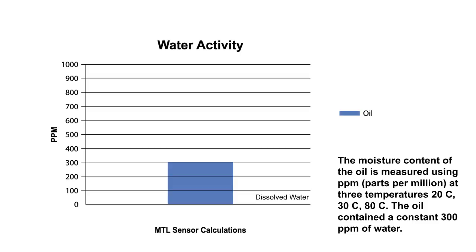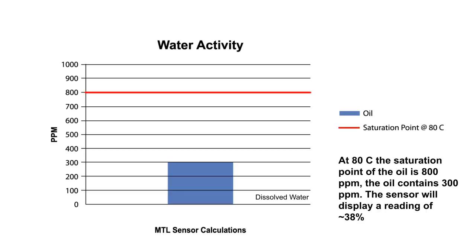The example below depicts an oil with a constant moisture content of 300 ppm at three different temperatures. The three measurements are taken using the ppm method at the specified temperatures. All three readings indicate the oil contains 300 ppm of water content. The oil at 80 degrees Celsius has a saturation point of 800 ppm, which is well above the oil's moisture content of 300 ppm. The sensor will display roughly 38%, indicating the oil is 38% saturated with moisture.